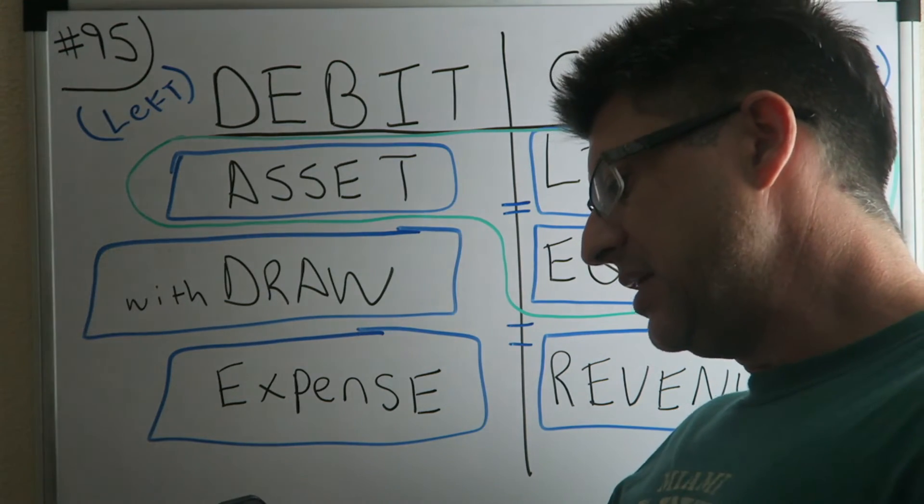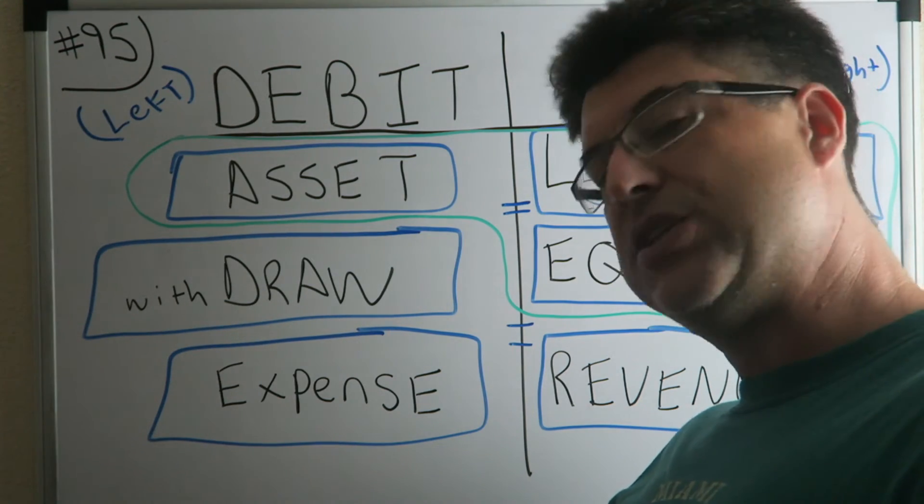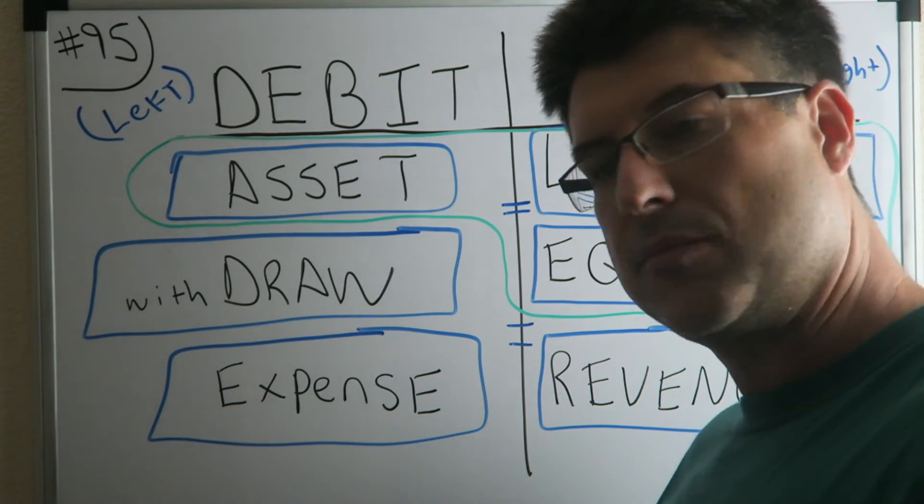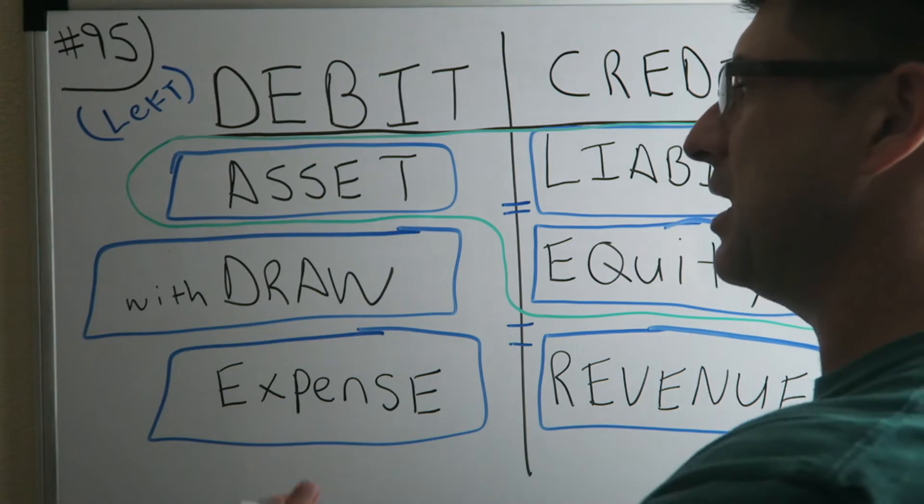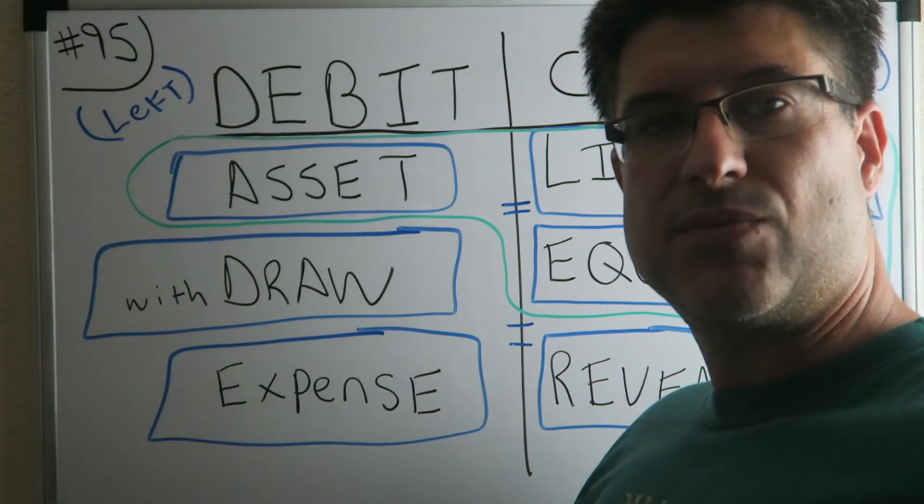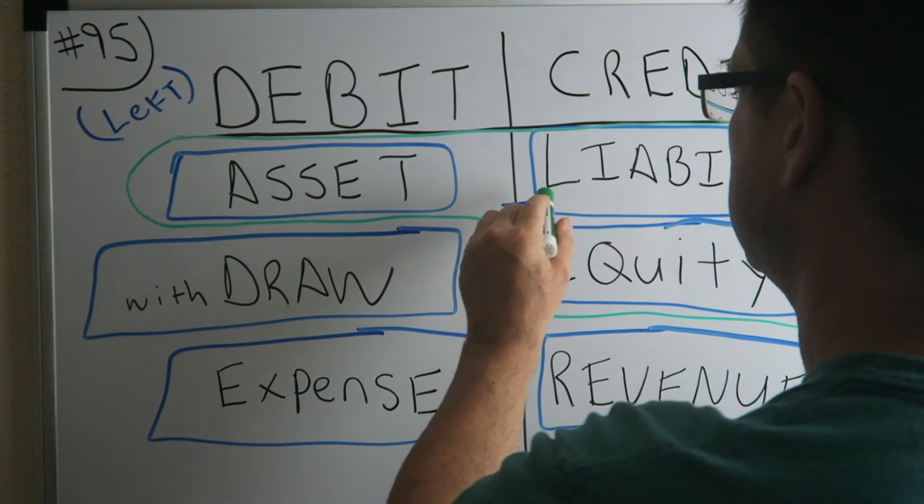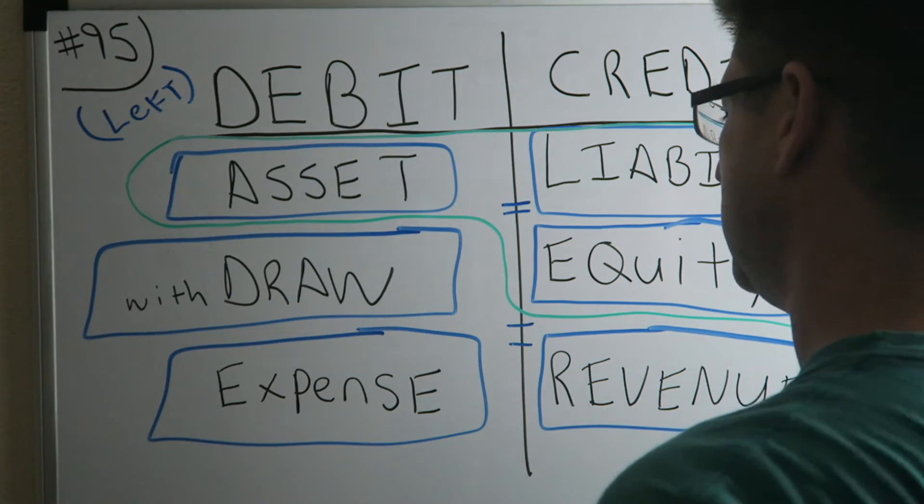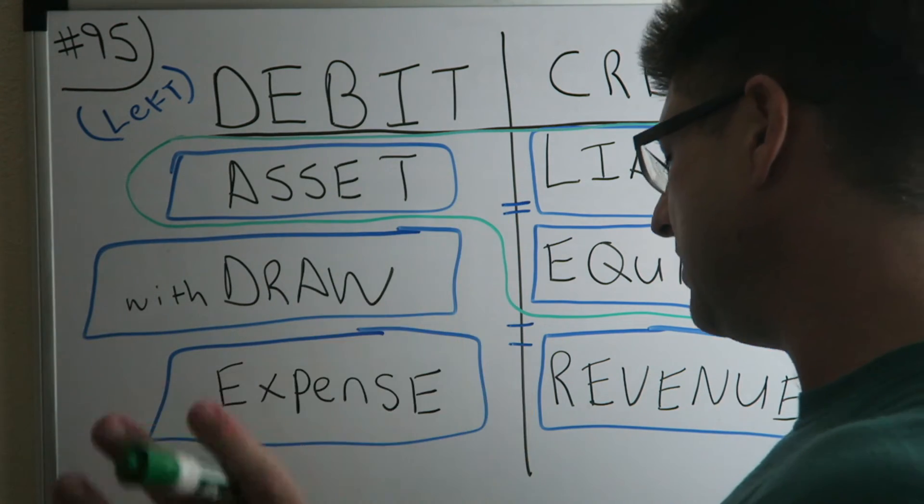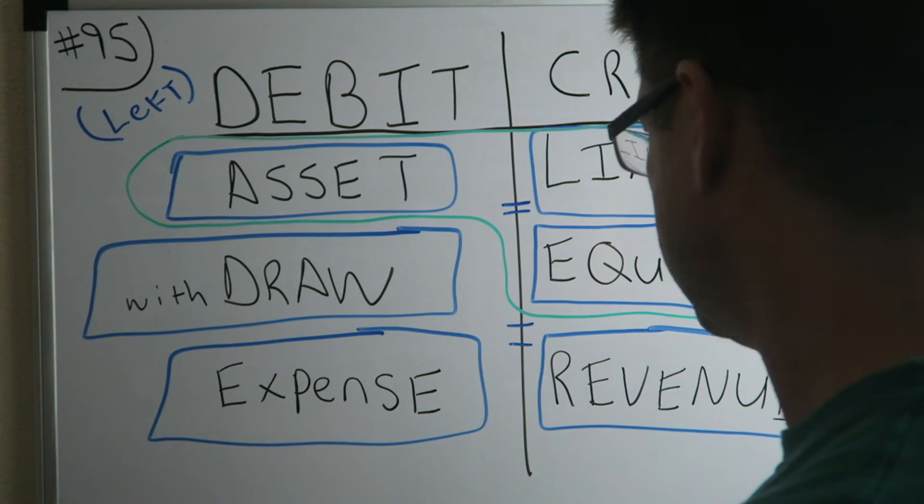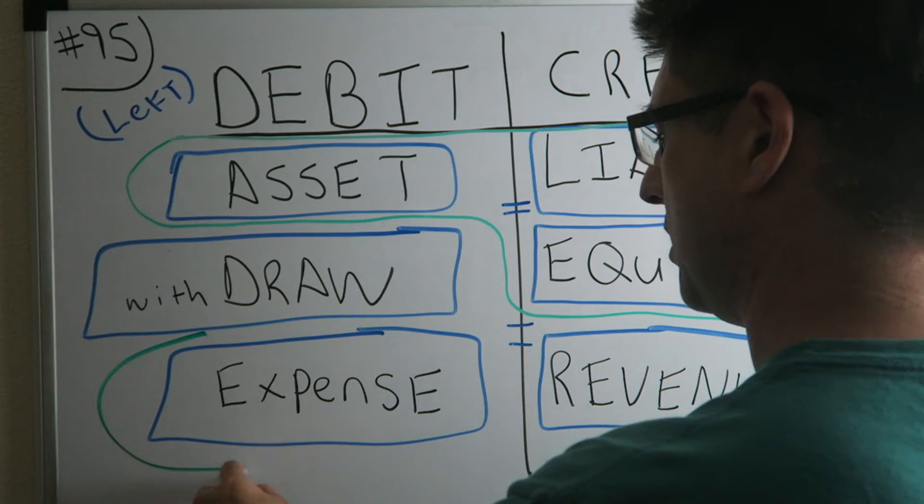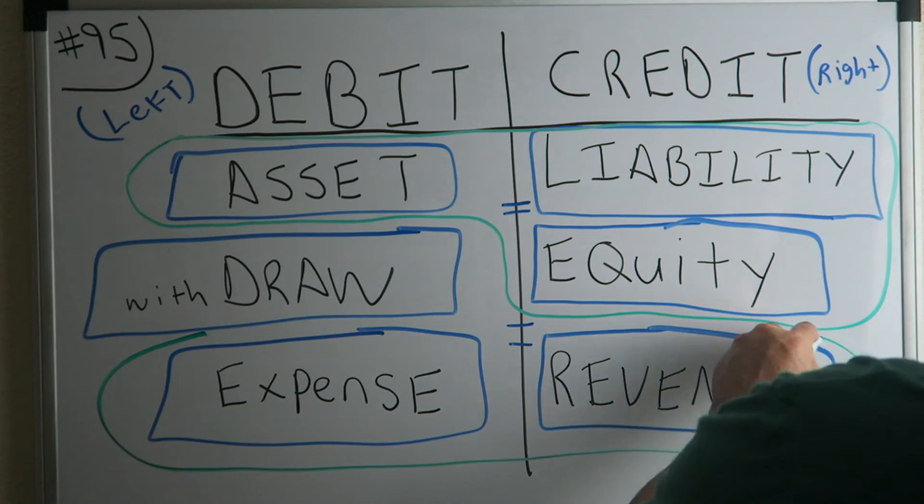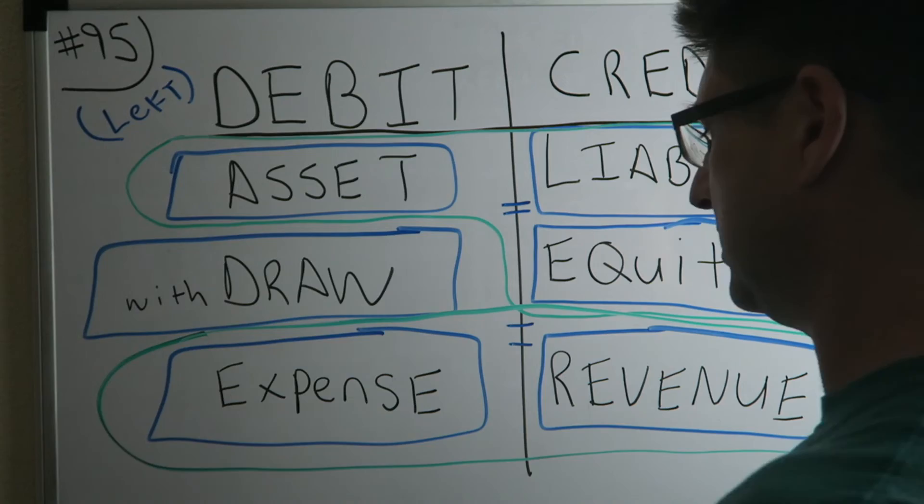Number six, it tells us the normal balance for each of the big six accounts. Yeah, normal balance, if it's a positive balance. So the seventh one I said, it shows that they equal each other, DC ADLER, and the eighth, it also has the income statement on here, which is revenue minus expenses.